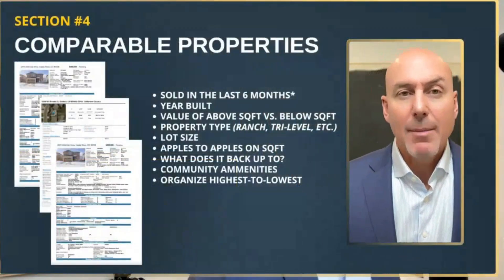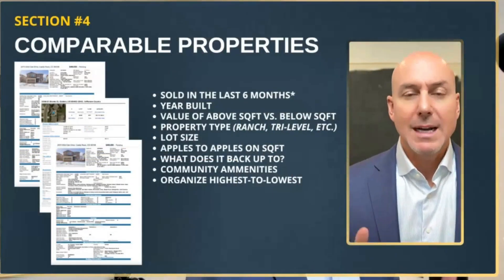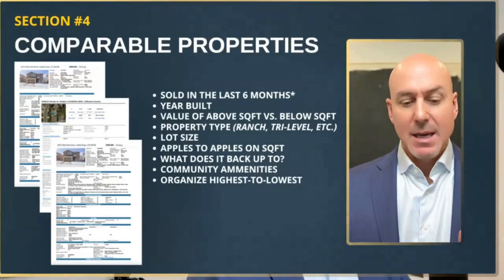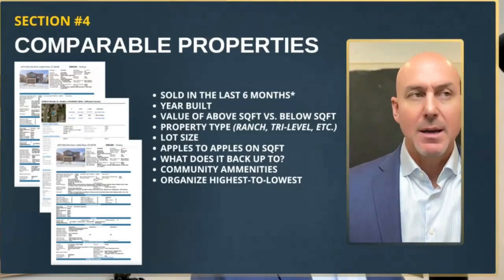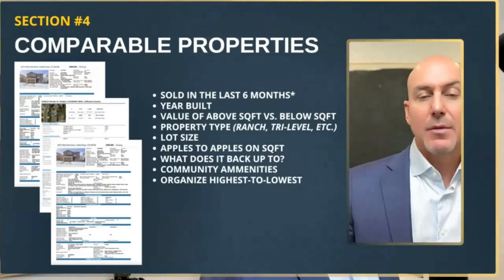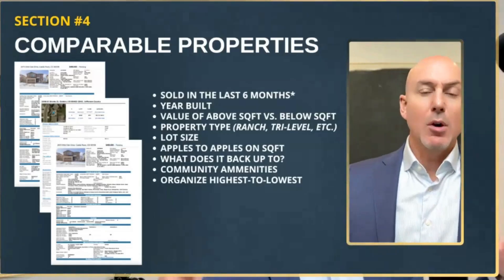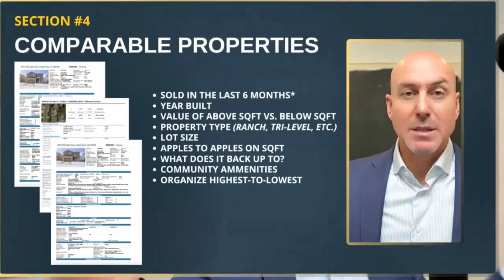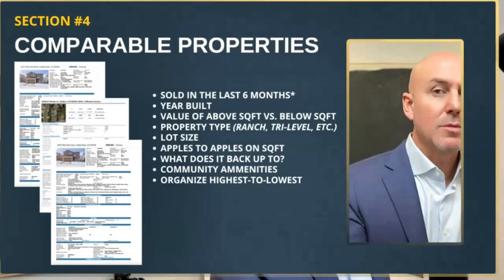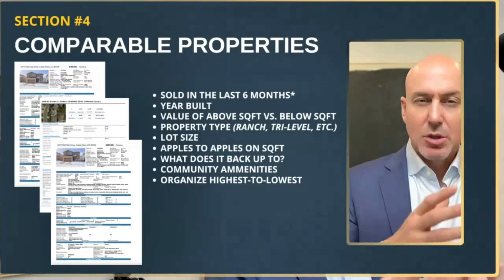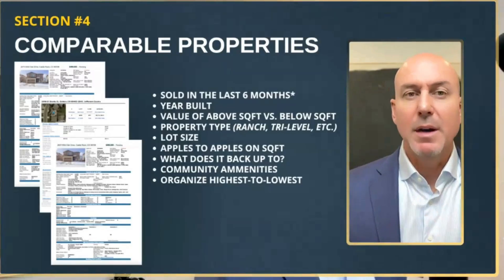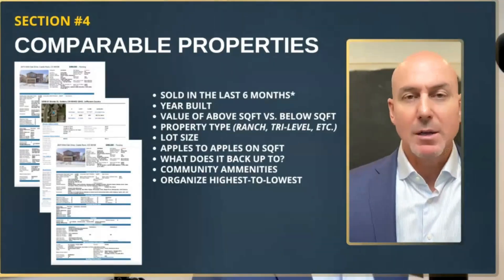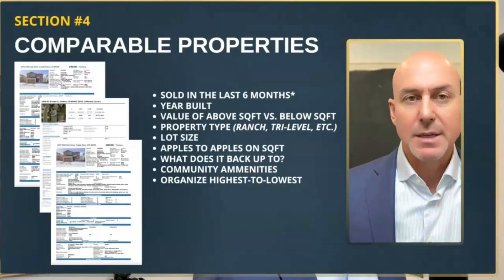For comparable properties, here are some golden rules I try to utilize — this works probably 90% of the time, unless you get into the multi-million dollar price range, very bizarre unique properties, farms, or ranches. But for most of us doing regular market analysis in regular areas, this will work all the time. I always make my comps sold in the last six months.